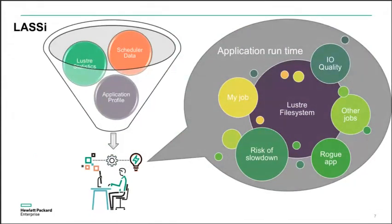We developed Lassie to address these issues. This tool combines the Lustre statistics collected by our tool called LabCat — developed internally by our team on Archer — with scheduler data from PBS. We build an application profile, then analyze this data to study what the application runtime on Archer is, how it behaves on a shared file system, how running jobs interact with other jobs, and what the risks of slowdown are. These are the things Lassie enables you to analyze.